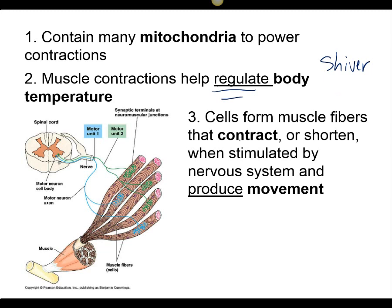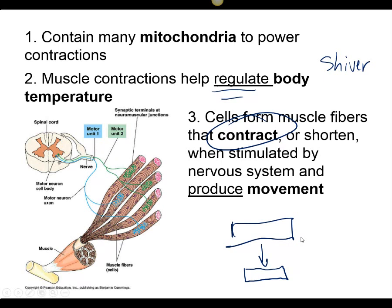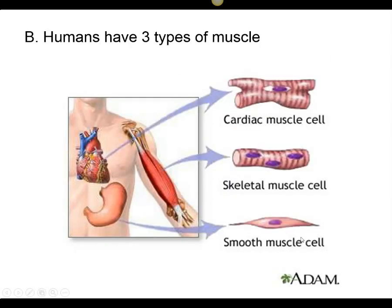Cells can only contract. So if this is a muscle cell, when it contracts, it gets smaller. A muscle cell cannot elongate or get longer. And the way that they produce movement, we'll talk about in a moment.